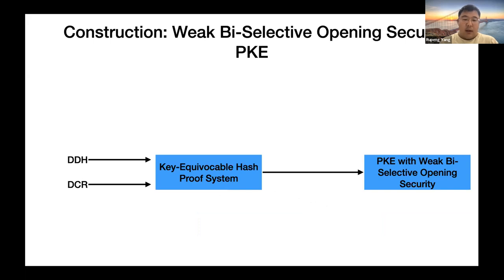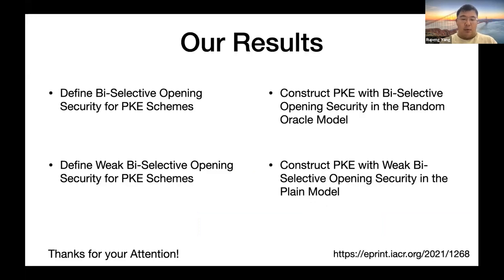Finally, we give a construction of PKE scheme with weak bi-selective opening security. To achieve this goal we present a new primitive called key-immune correlated hash, and instantiate it from either the DDH assumption or the DCR assumption, and give a general construction of PKE scheme with weak bi-selective opening security from this new primitive. For time reasons we are not able to cover all details — please watch the talk or read our paper for more details.